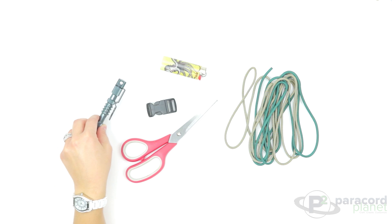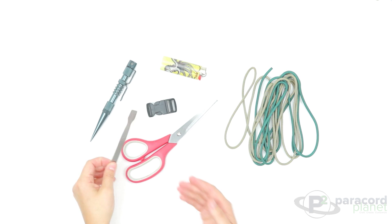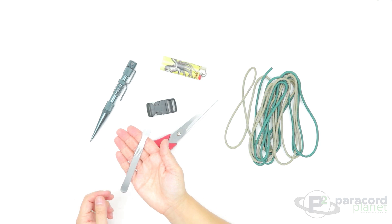You will also need a lighter, scissors, a buckle—I have a three-quarters inch buckle here—and then a couple optional tools that will be helpful. Here is a knotter's tool with fins inside and then we also have our brand new smoothing tool that I will also use at the end of the bracelet.